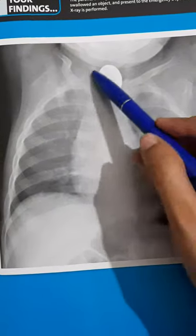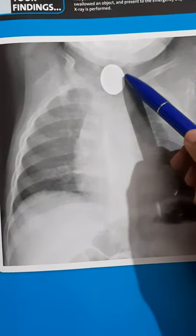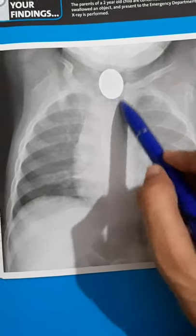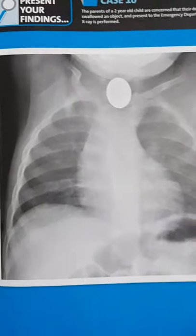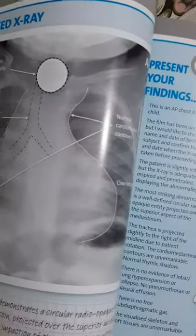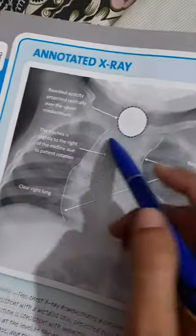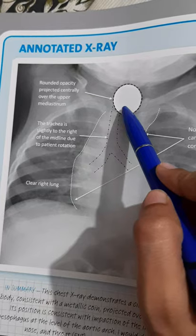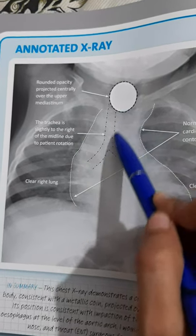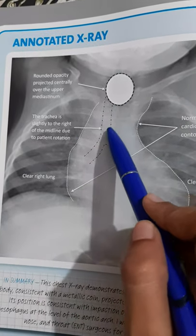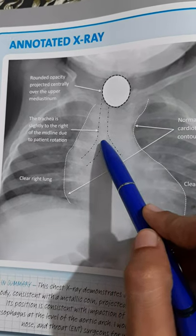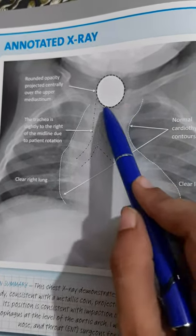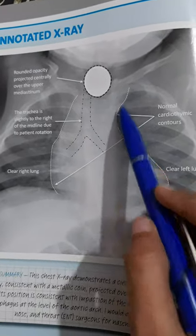We can see a clear opacification of an object on the x-ray. Coming towards the interpretation, this is a rounded opacity projected centrally over the upper mediastinum. The trachea is slightly to the right of the midline due to patient rotation, as we can see through the clavicle.